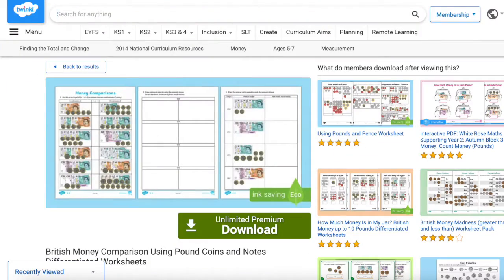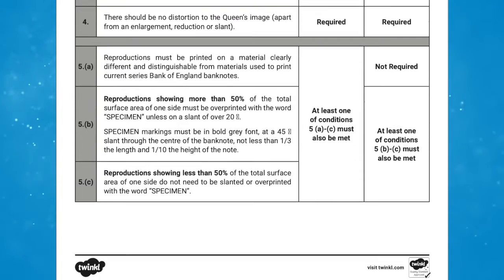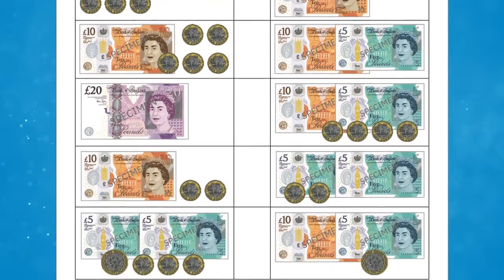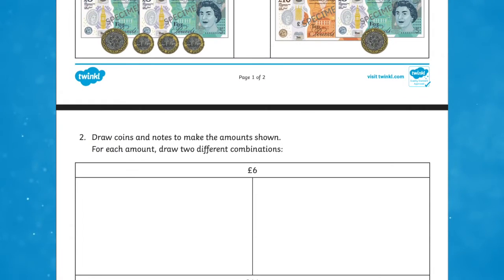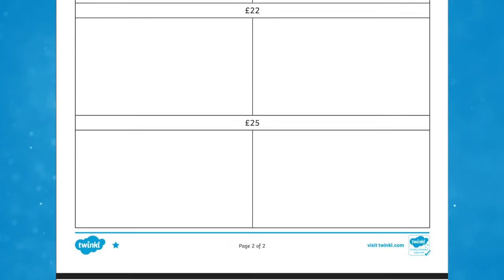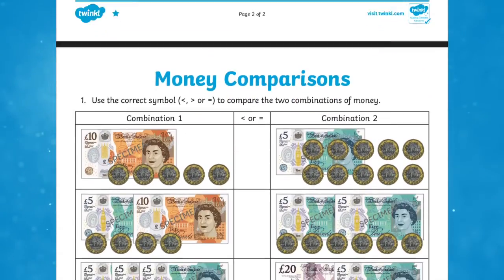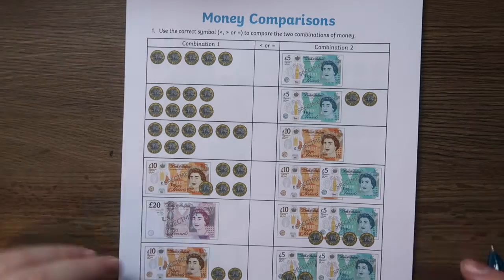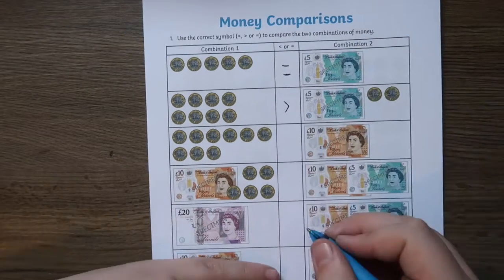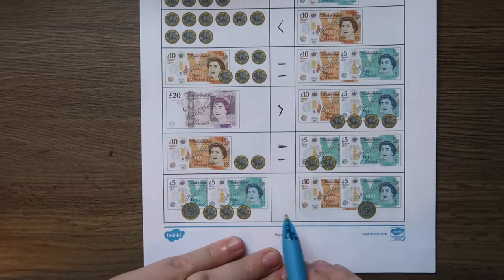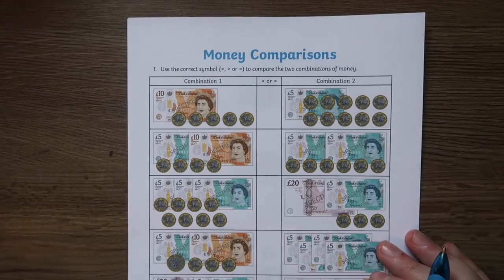The British money comparison using pound coins and notes worksheets are a great way for children to fully grasp the concept of larger amounts of money and how to add them up quickly and efficiently. These are differentiated from one star to three star, so there's something in this pack for all abilities. Use these worksheets to help your children develop their understanding of how to make amounts of money using different combinations of pound coins as well as notes.